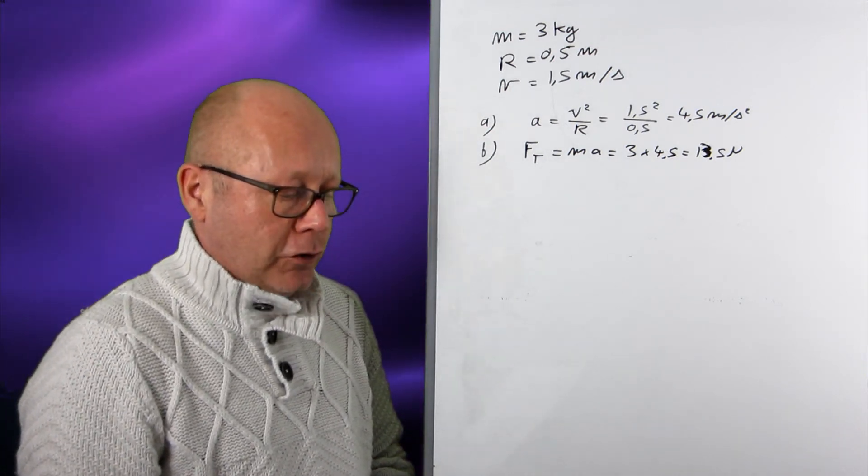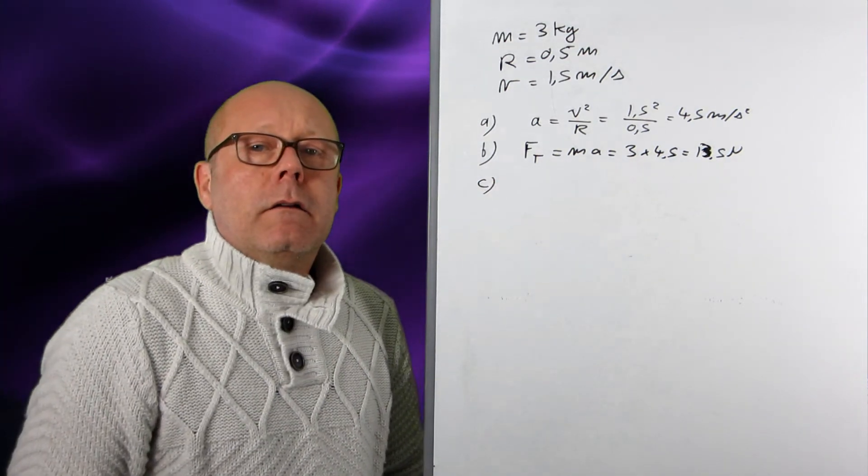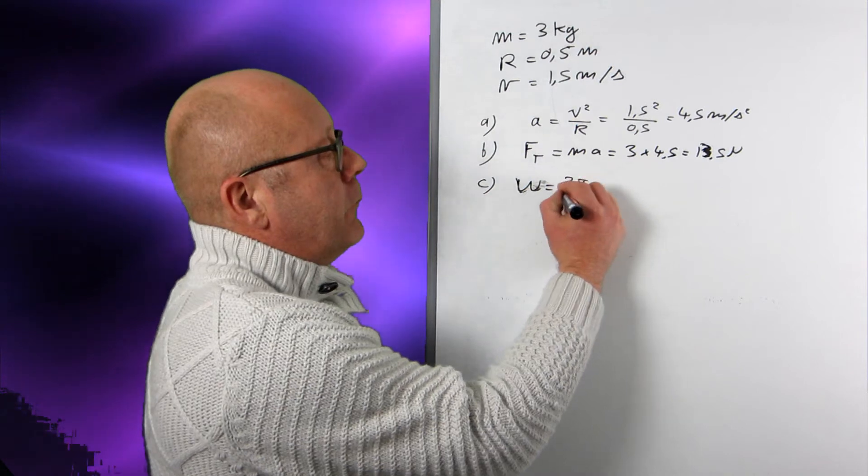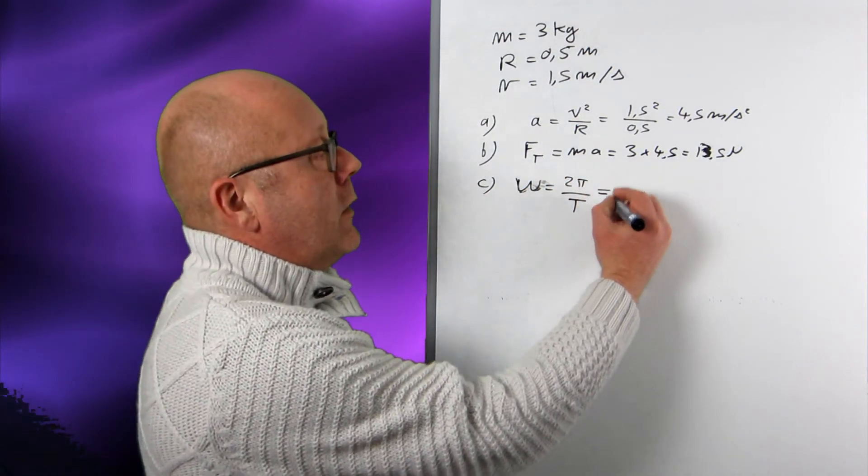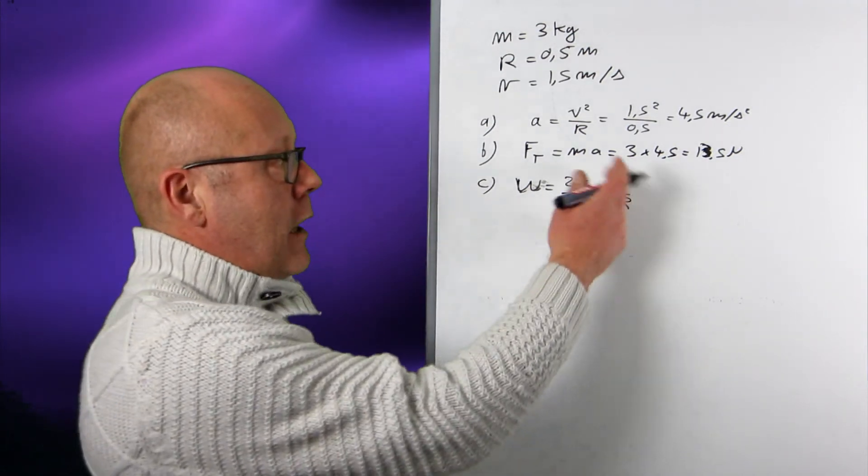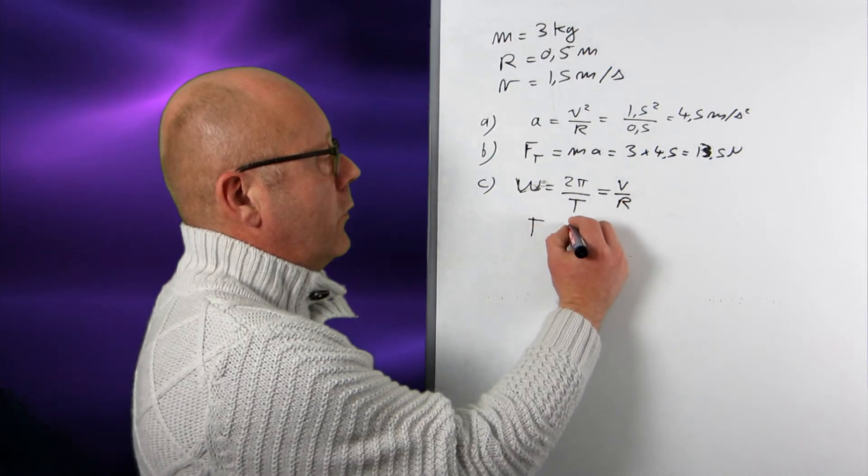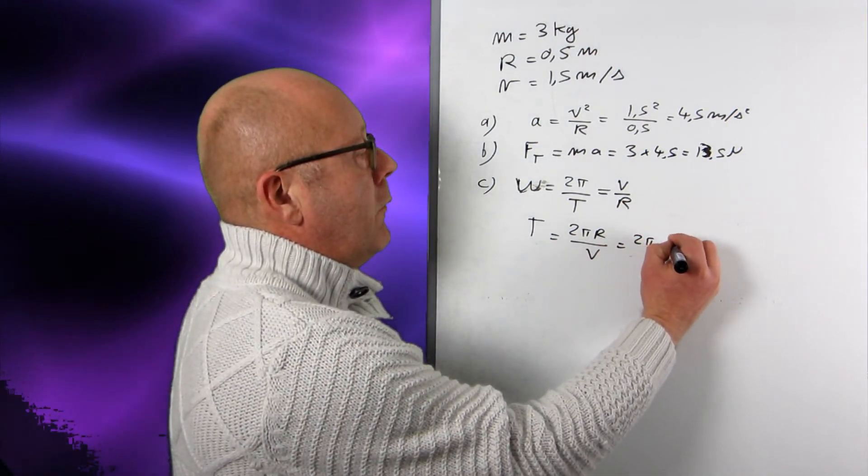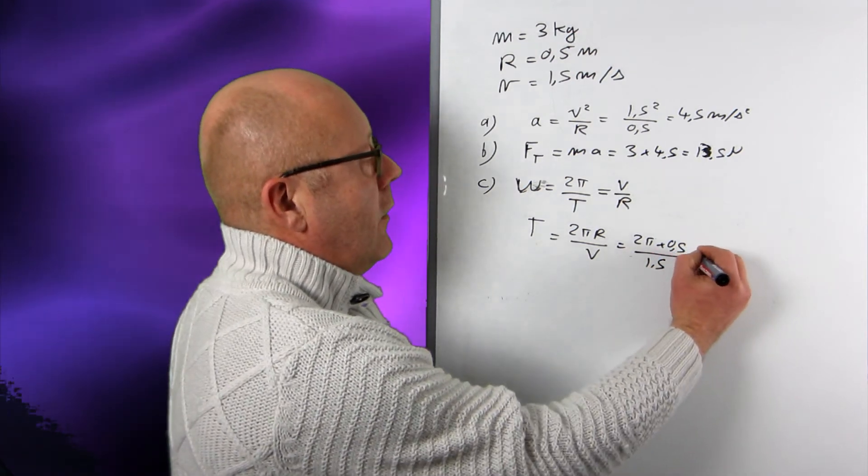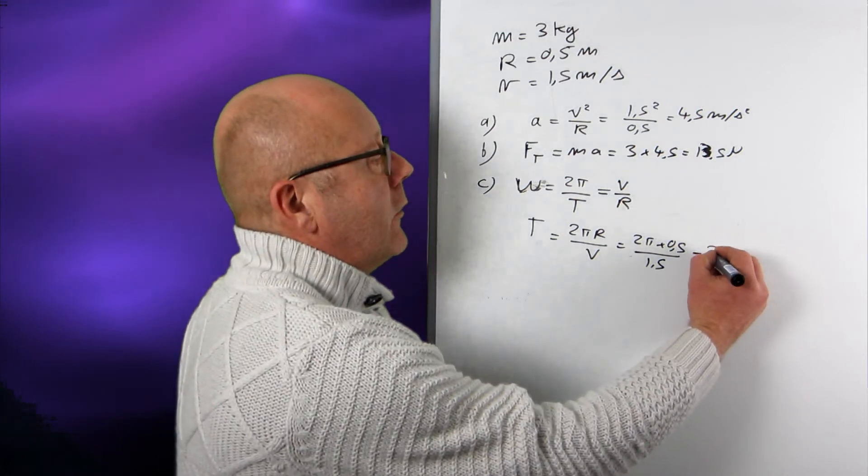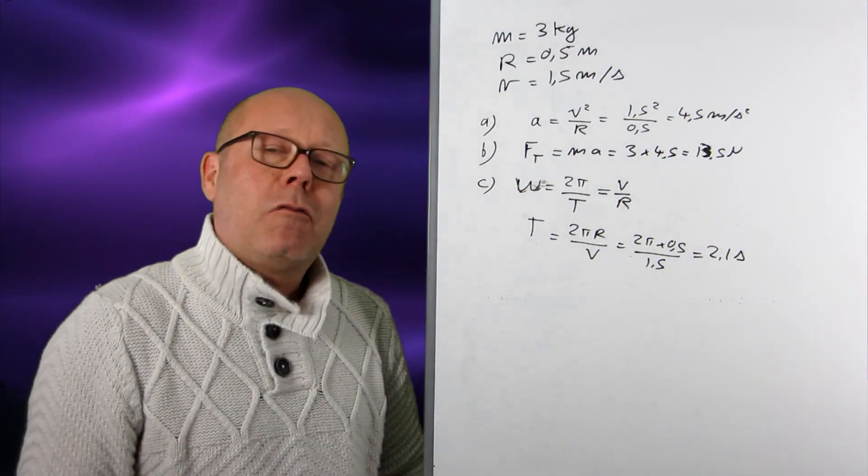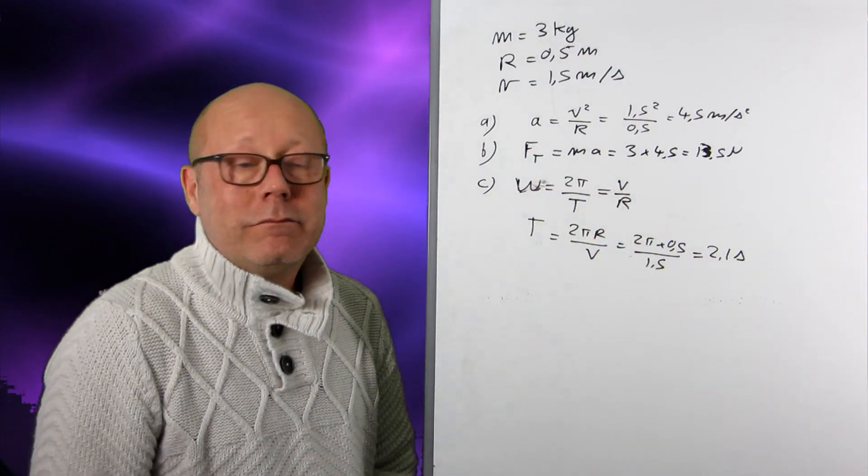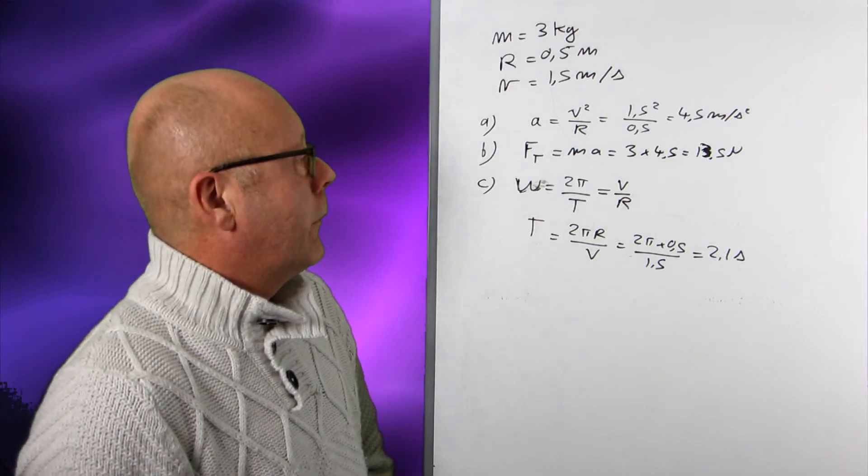C. What is the period of motion? Now, I often start with ω equals 2π on T. And I know that omega is also equal to v on r. Therefore, I can rearrange this and find T. T equals 2πr on v. And then plug in the numbers. 2π by 0.5 meters divided by 1.5 meters per second. And that will give me a period of 2.1 seconds. Now, you see, when I want to solve problems, I just need to know basically two formulas. Omega equals 2π on T and v equals r omega. And of course, the centripetal acceleration v square on r.